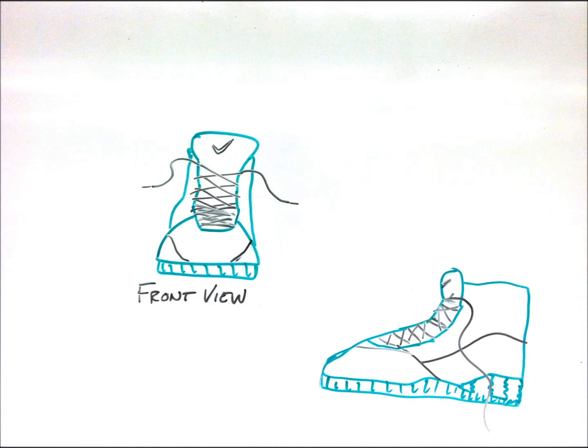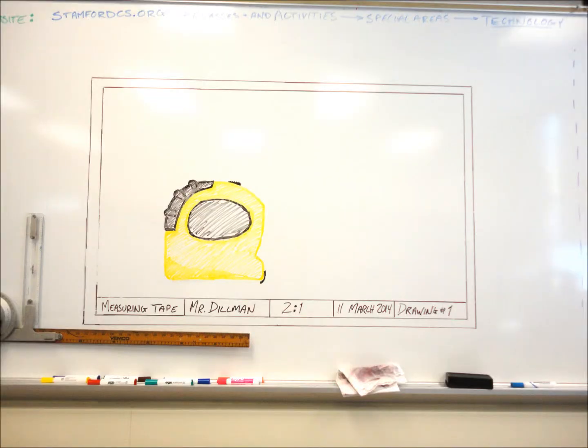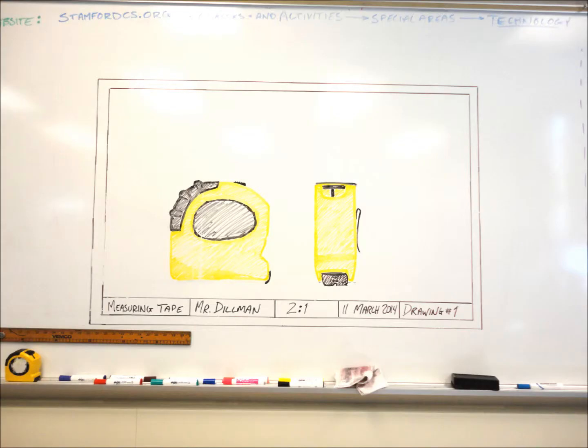Finally, we must ask ourselves if the views have been rotated properly. In this example, we would rotate the measuring tape from the front view to see the right side view, like this. So it should appear like this on our drawing.